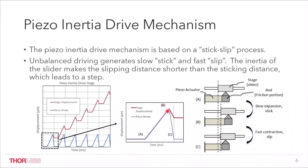From phase B to phase C, the piezo actuator is discharged quickly to achieve fast contraction. The rod will be pulled back suddenly.